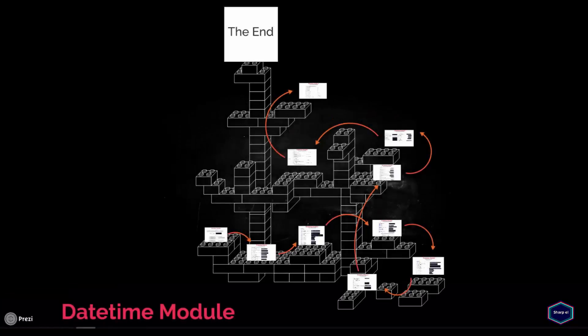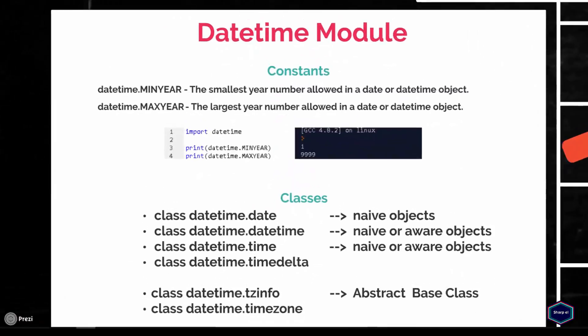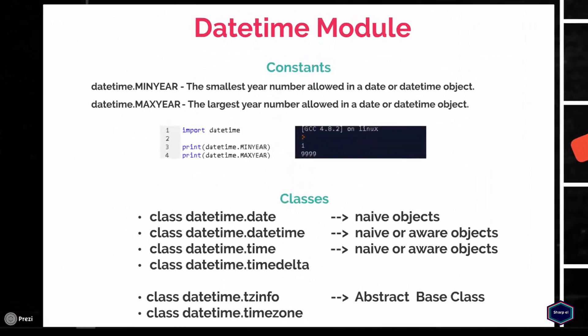Welcome to my tutorial series on modules. Today I will cover the datetime module. The datetime module defines two constants, MINYEAR and MAXYEAR, and six different classes for manipulating dates and time in both simple and complex ways.